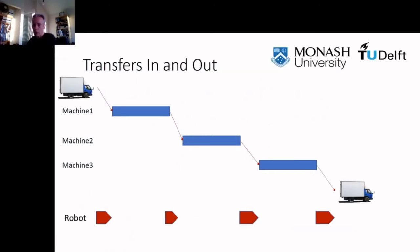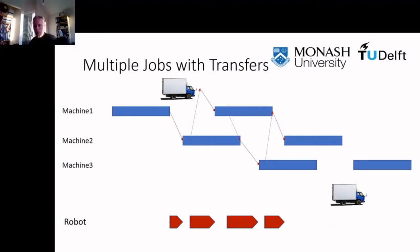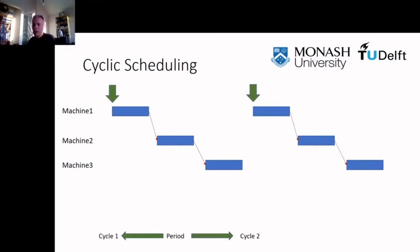The job begins at some input point, and after each task the job is moved to another machine, ending at the output. Throughput is increased by processing multiple jobs in parallel, which increases the complexity of the transfer scheduling sub-problem. The solid line represents the robot carrying a job, and the dotted line represents the unloaded robot going to fetch another job. In cyclic scheduling, each job goes through the same cycle as the previous job with a delay, which we term the period of the cycle.